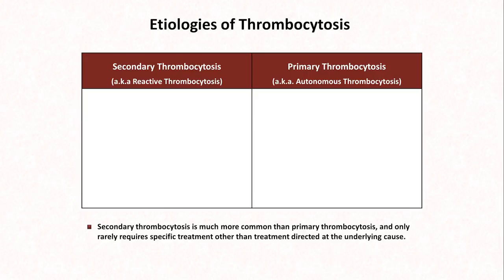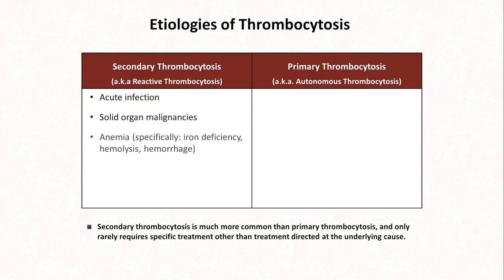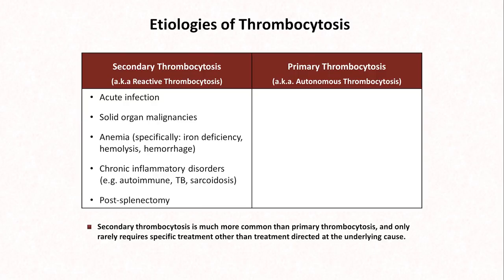Common etiologies of secondary thrombocytosis include any acute infection, solid organ malignancies, some forms of anemia — specifically iron deficiency, hemolysis, and acute hemorrhage — chronic inflammatory disorders such as autoimmune disease and chronic infections, and post-splenectomy.